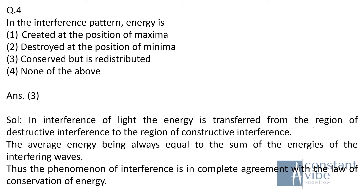In the interference of light, energy is transferred from the region of destructive interference to the region of constructive interference. The average energy is always equal to the sum of the energies of the interfering waves. This agrees with the law of conservation of energy — energy is neither created nor destroyed, just redistributed. So the answer is option 3.